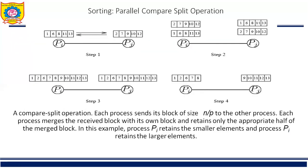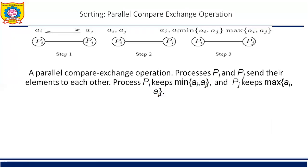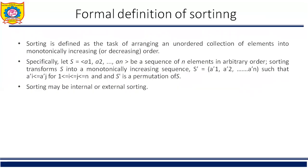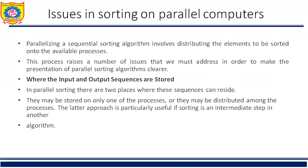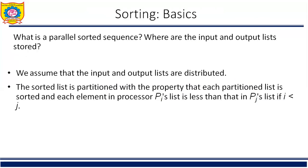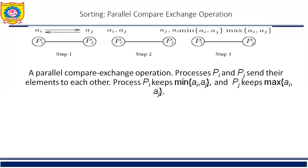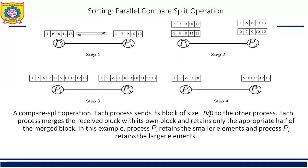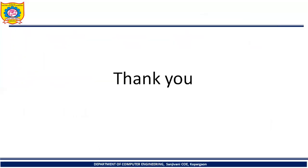This covers the basics and issues in sorting on parallel computers. In this unit, we discussed the benefits of sorting, the formal definition of sorting, and the issues of sorting on parallel computers: where input and output sequences are stored, how comparisons are performed, one element per process, and more than one element per process — illustrated with parallel compare and exchange and compare and split operations. Thank you very much.